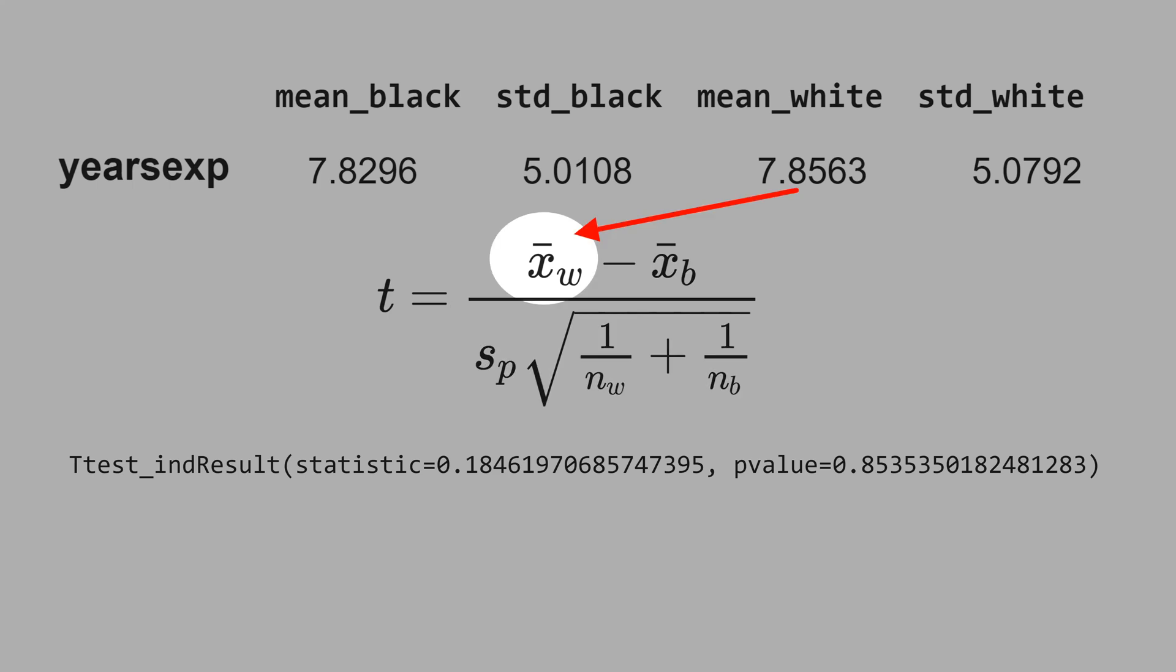This x-bar w is the mean white, that is 7.85, and this x-bar b is the mean black, that is 7.82. This difference is so small that it's not even half a standard error.